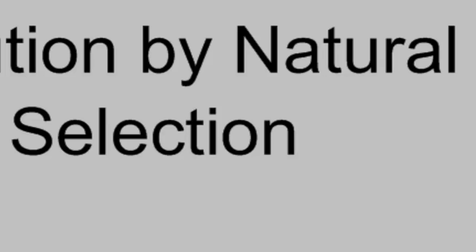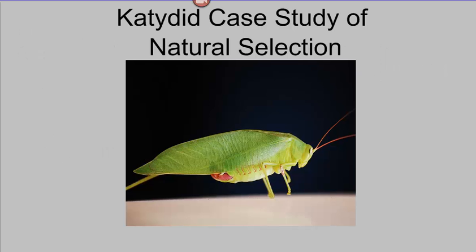Welcome to this presentation on evolution by natural selection. We're going to begin by talking about the process of selection in general, and then focus more on how natural selection works according to Darwin. Because natural selection is a process that occurs in nature, it's best understood by using case studies and real examples. We have an untold number of examples of natural selection occurring in the natural world and in the laboratory.